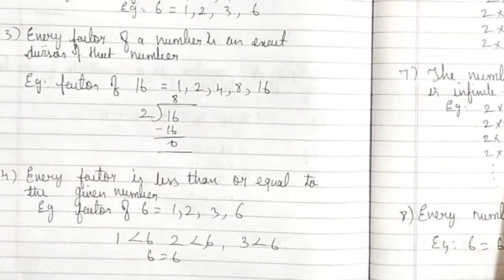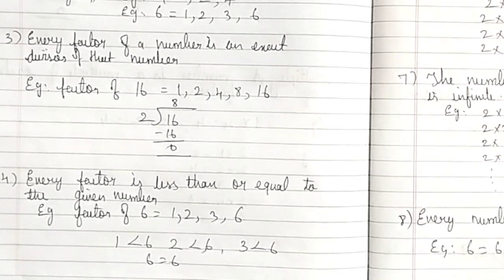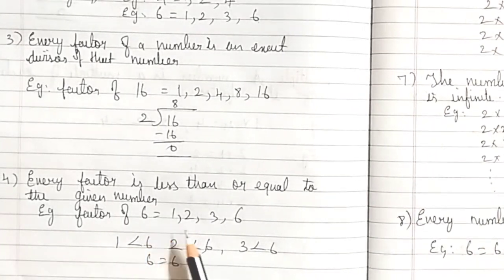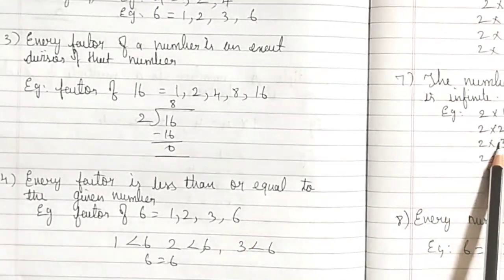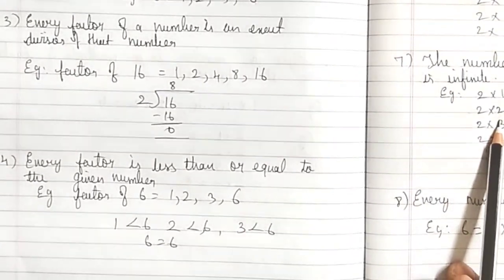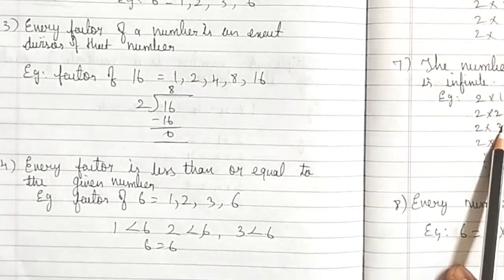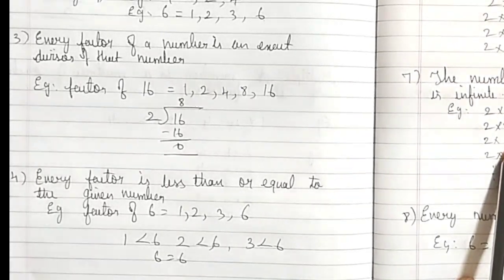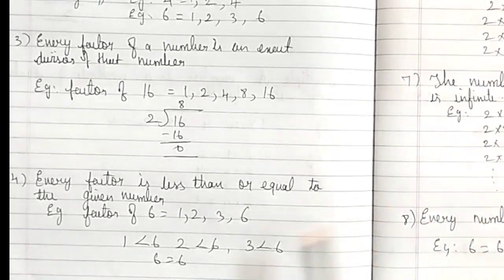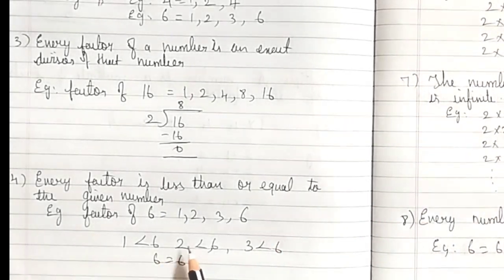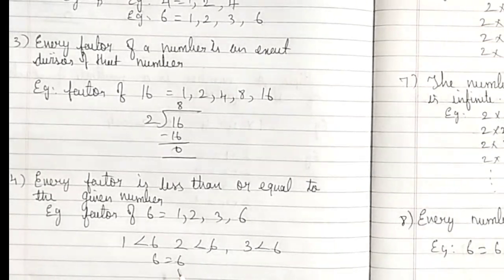Fourth: Every factor is less than or equal to the given number. For example, the factors of 6 are 1, 2, 3, and 6. Here you can see: 1 is less than 6, 2 is less than 6, 3 is less than 6, and 6 is equal to 6. That means every factor is less than or equal to the given number.